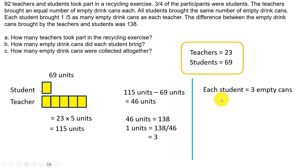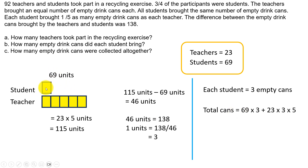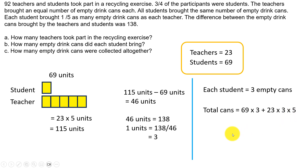The total number of cans can be written as 69 times 3, since each student brings 3 empty cans and there are 69 students, plus the number of cans brought by the teachers altogether, which is 23 teachers times 3 times 5. That is equal to 552.